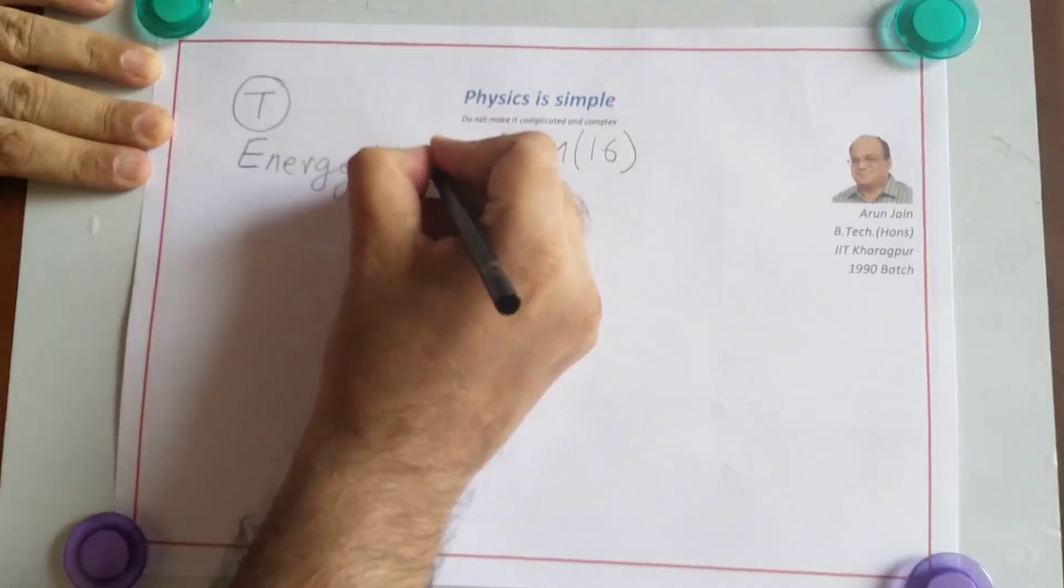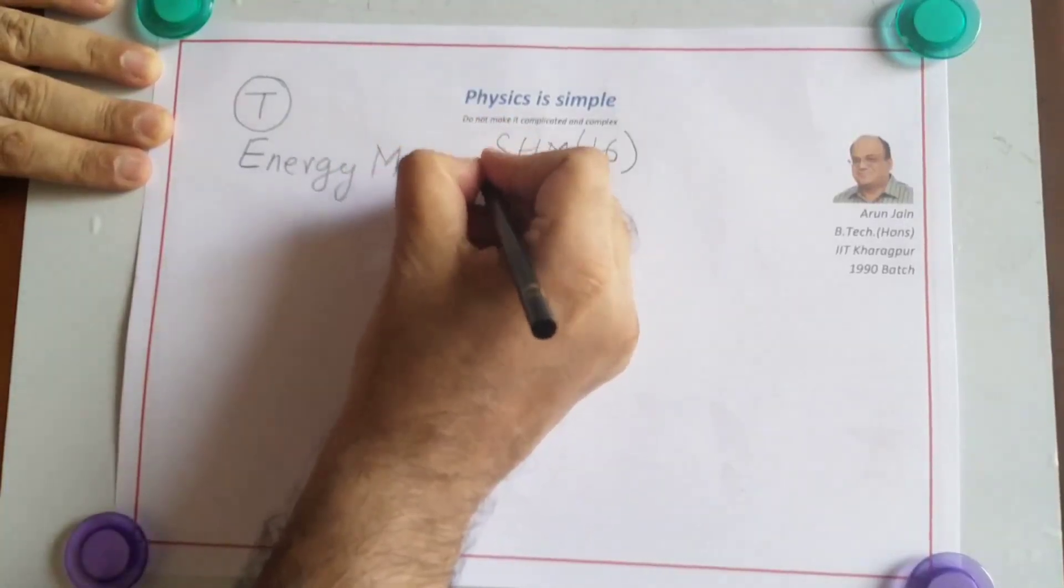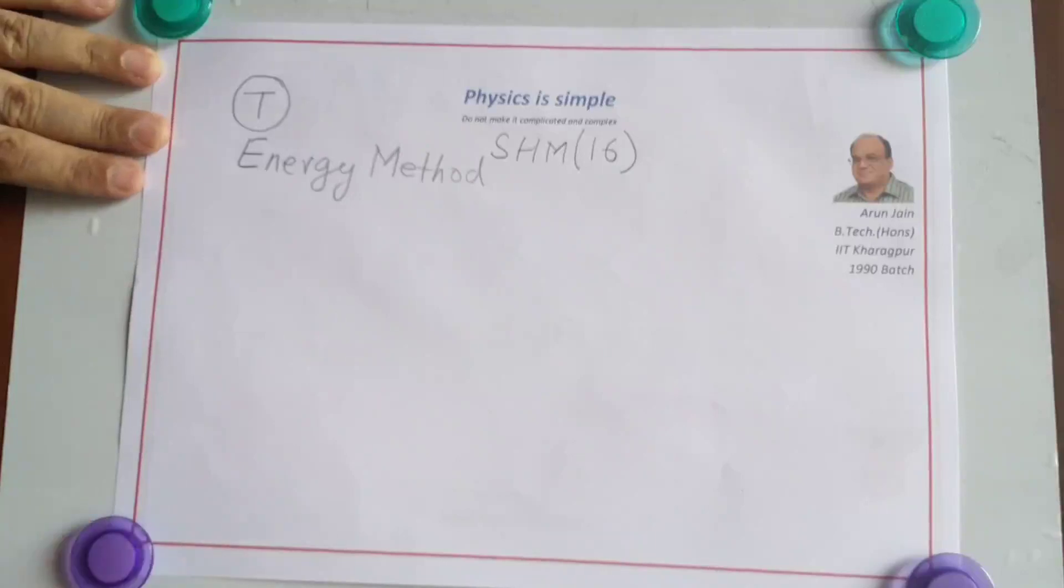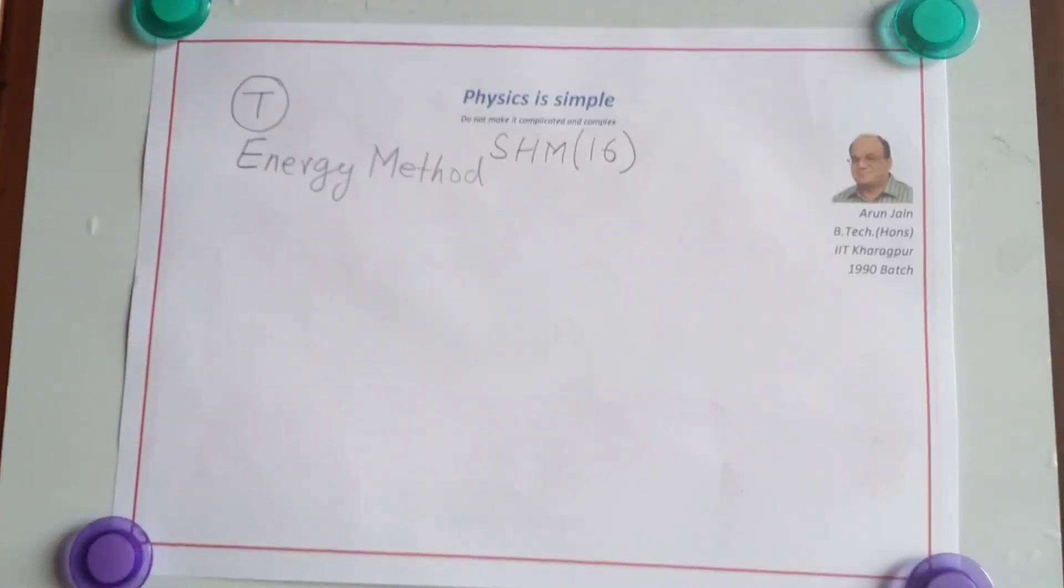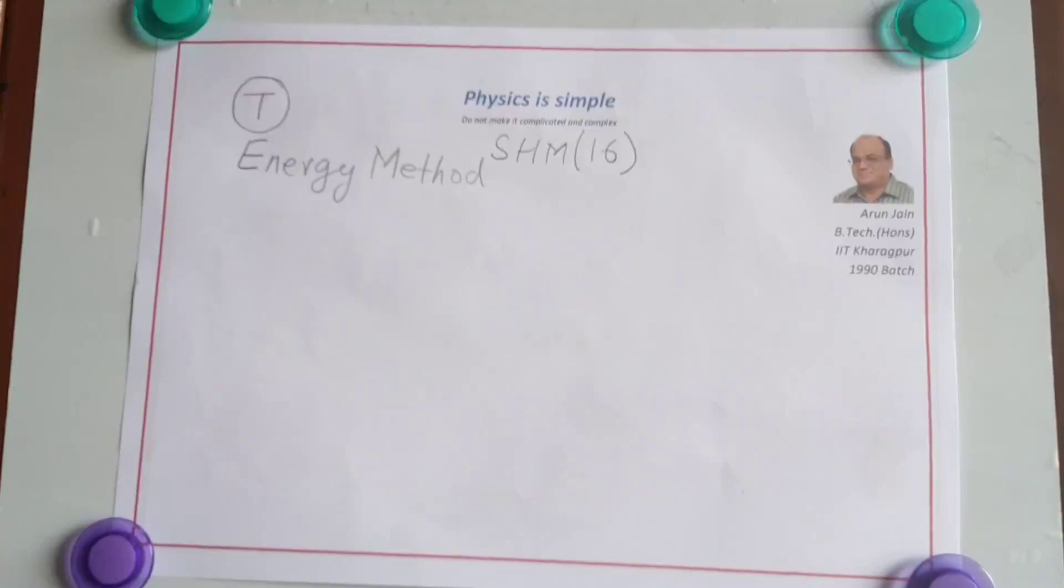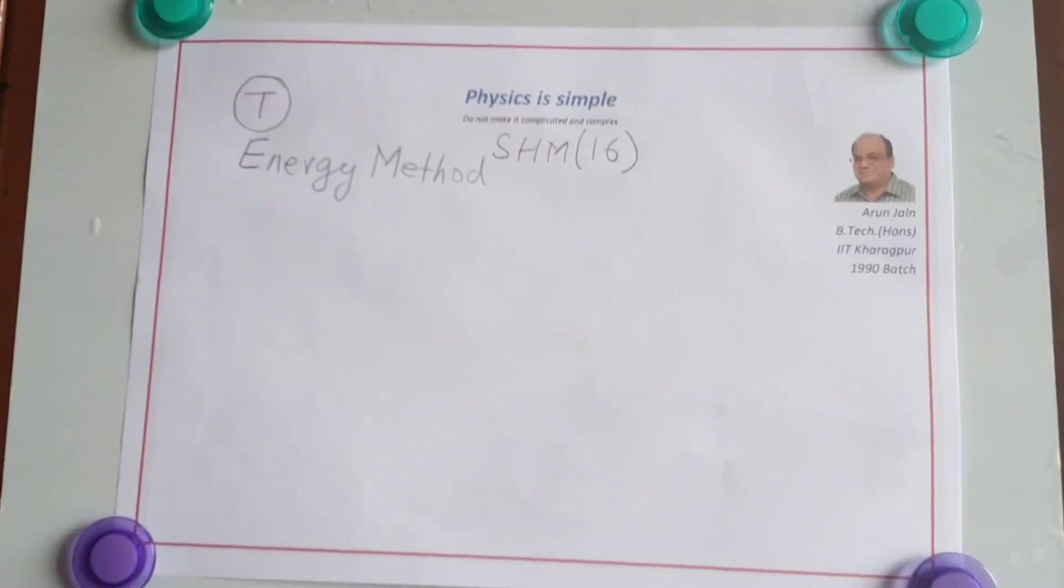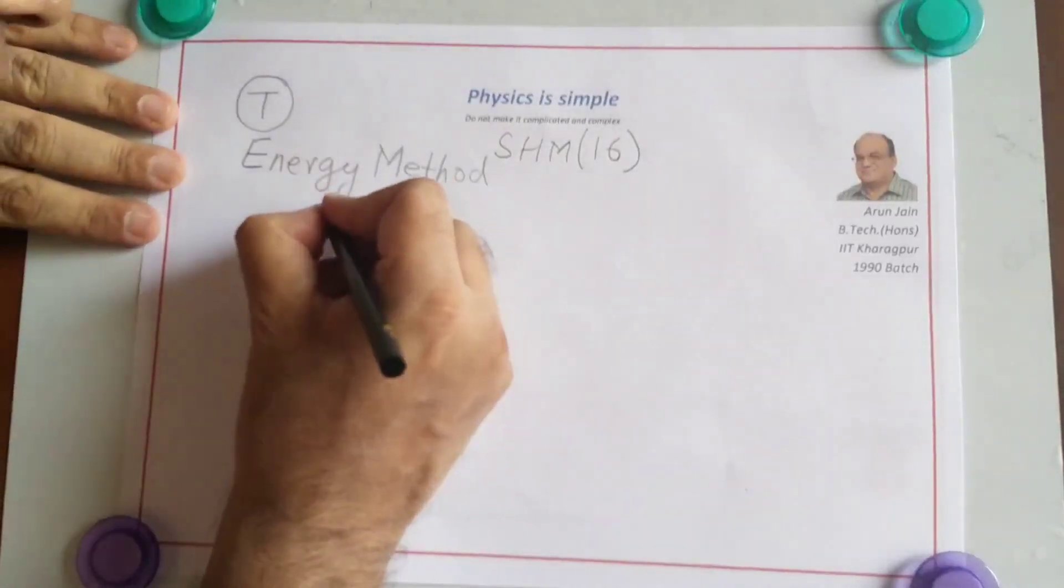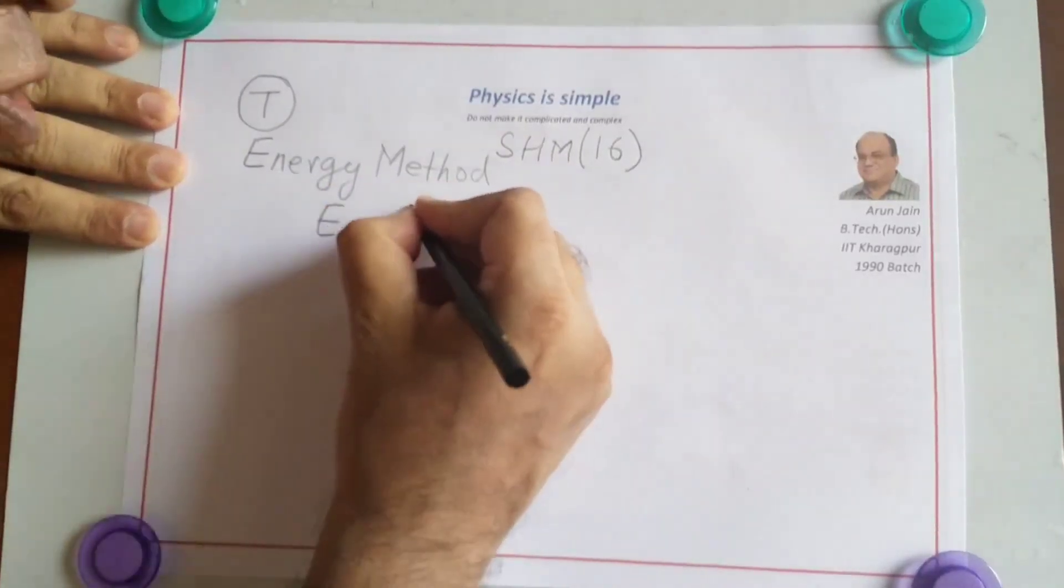The first step in this method is same as the first step in the earlier method, that is find the mean position. Once we have found the mean position, now we go to the displaced position. At the displaced position, we try to find the total mechanical energy, that is kinetic energy plus potential energy.